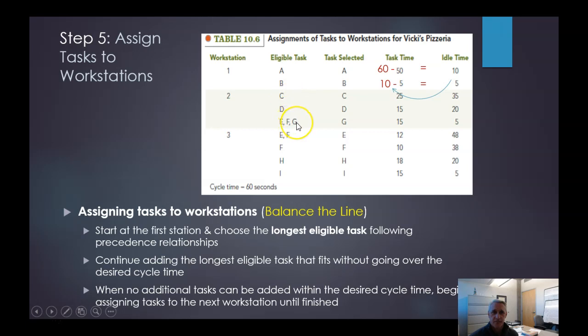So we have C, D, E, F, and G. So we start again with 60 seconds. C takes 25, that leaves 35. 35 minus 15 is equal to 20. 20 minus 15 is equal to 5. Okay, so that's about all we can do with workstation two.